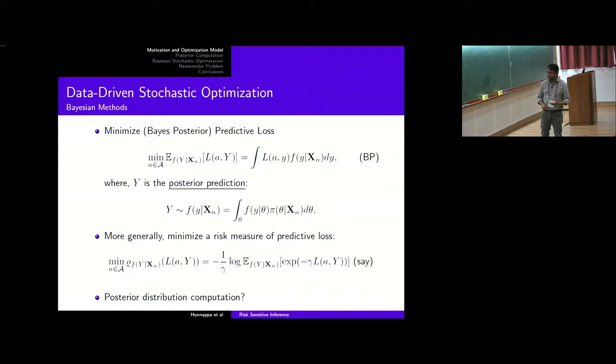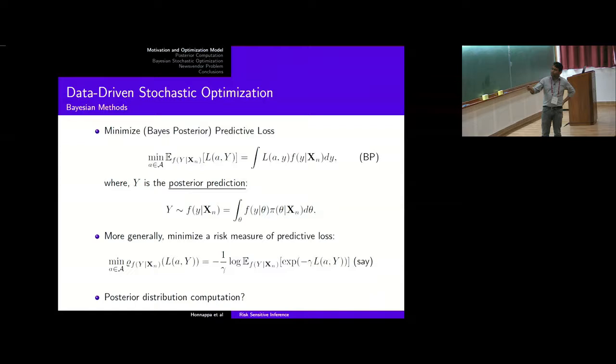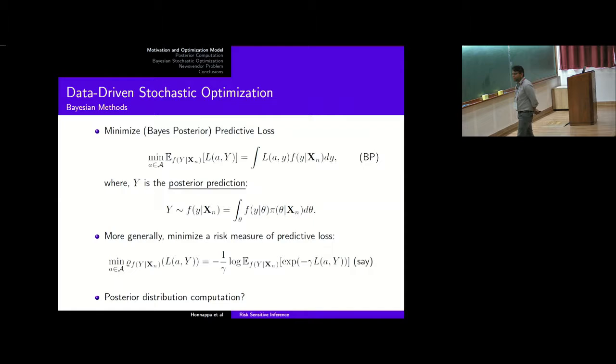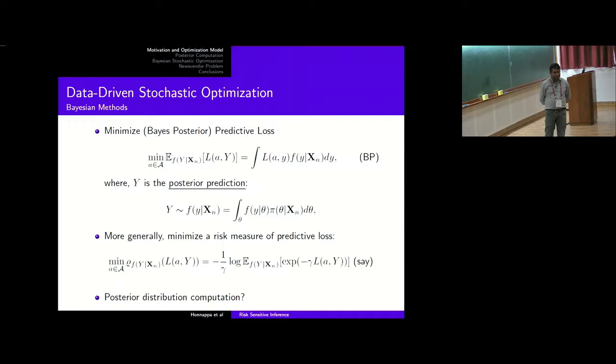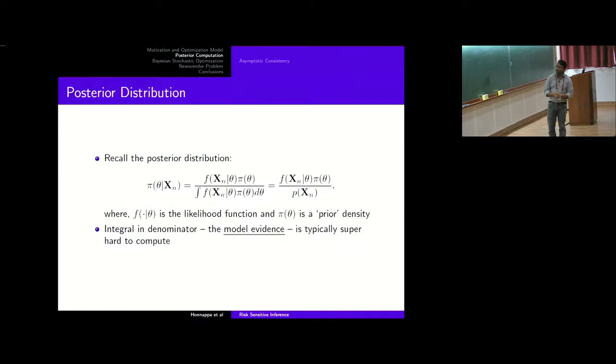If you adopt this perspective, you immediately run into the question of how to compute the posterior. Gamma here can be positive or negative, and it measures your sensitivity to tail effects. Eric already gave us a nice introduction to this question, so I will just summarize and talk about posterior computation. To recall: what is the posterior distribution?